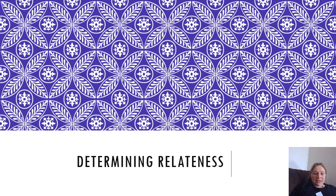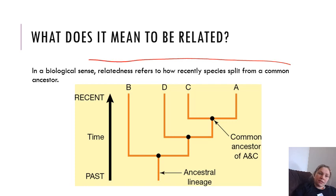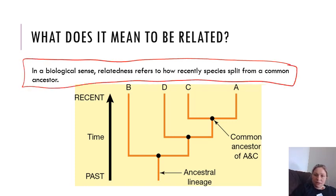So, determining relatedness. What does it mean to be related? In a biological sense, relatedness refers to how recently species have split from a common ancestor. It's really vital for us to know and be able to define that, because we'll have many questions that come up on a SAC or an exam where we'll need to explain the relatedness between species. So that definition is important.